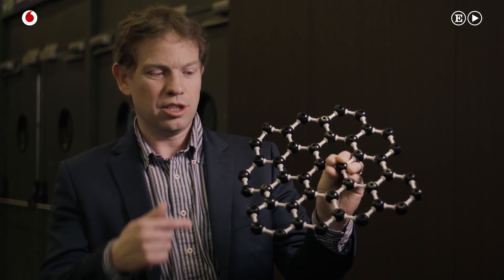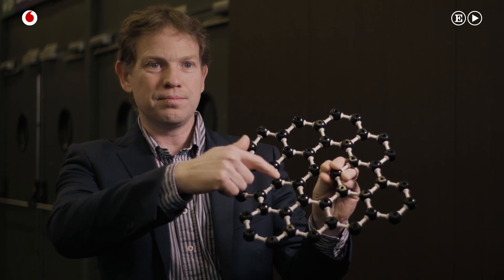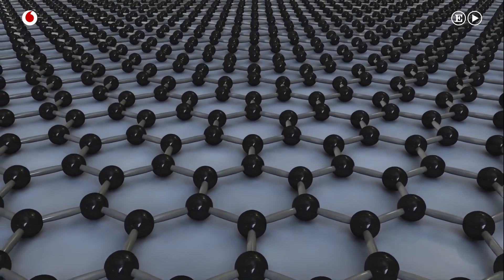Graphene is a revolutionary new material discovered only about 10 years ago. It's actually like this - it just consists of carbon atoms, but in total it's a layer that's only one atom thick.